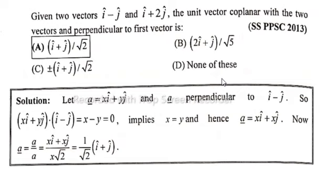In this lecture, I will solve SSPPSE 2013 MCQ. Given two vectors i minus j and i plus 2j, the unit vector coplanar with the two vectors and perpendicular to first vector. Solution: first of all,